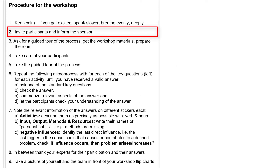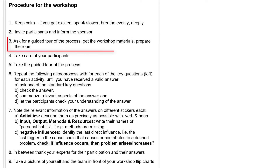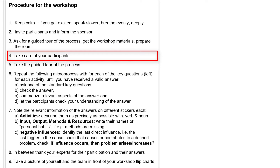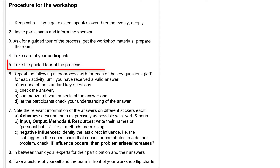Invite participants and inform the sponsor. Ask for a guided tour of the process, get the workshop materials, and prepare the room. Take care of your participants — the better they feel, the better your results. Take the tour of the process, whether on the shop floor or virtually through software screens, no matter if you know the process or not. Let the experts show you inputs, outputs, methods, resources, activities, and negative influences. And if allowed, take photos and screenshots as a reference for the workshop.